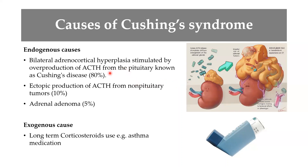Other causes include ectopic production of ACTH from non-pituitary tumors and adrenal adenoma — a tumor directly at the adrenals. The condition where a pituitary problem leads to excessive ACTH production is specifically called Cushing's disease, and it is the number one cause of Cushing's syndrome. There are also exogenous causes, such as long-term intake of corticosteroids, for example in the treatment of asthma.